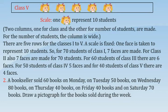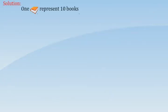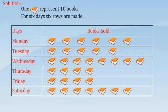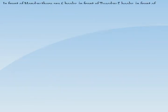A bookseller sold 60 books on Monday, 50 books on Tuesday, 80 books on Wednesday, 40 books on Thursday, 40 books on Friday, and 70 books on Saturday. Draw a pictograph for the books sold during the week. Solution: one book symbol represents 10 books. For 6 days, 6 rows are made. In front of Monday, there are 6 books. In front of Tuesday, 5 books.